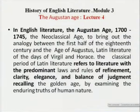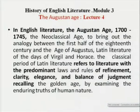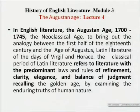Now we come to the Augustan age, lecture 4. In English literature, the Augustan age roughly from 1700 to 1745 was the neoclassical age. It was a self-conscious imitation of the age of Augustus, which was supposed to be the classic age — the Latin literature of the days of Virgil and Horace, the classical period of Latin literature. It also refers to literature with the predominant laws and rules of refinement, with attention to detail, clarity, elegance and balance of judgment, recalling the golden age by examining the enduring truths of human nature.